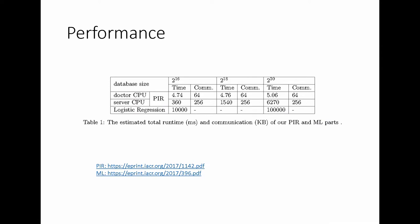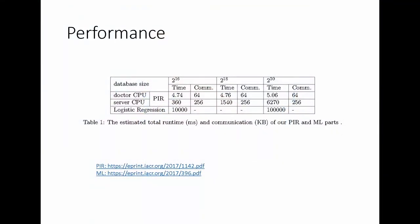A few notes about performance: we don't have an implementation, but you would expect the ML model to be the most computationally difficult step. I think logistic regression on encrypted data is feasible based on prior work. For the private information retrieval step, we pulled data on CLPIR from our first reference, which shows that even with a large database, the time involved and communication size are feasible. So we should be able to work with that.